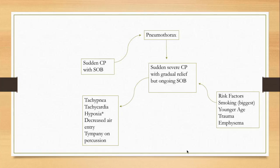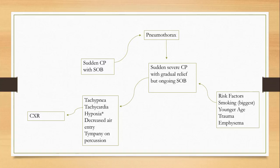There may be some decreased air entry or tympany on percussion if there is a large amount of pneumothorax. On that side of the lungs you will notice there is tympany because of excessive air. Chest X-ray is going to be the diagnostic test of choice, and very quickly you will find out that the patient has pneumothorax.